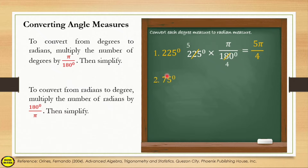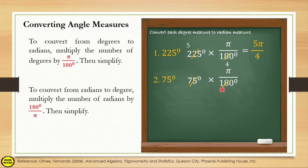Another example: 75 degrees. Multiply 75 degrees by π/180. The degree units cancel. The greatest common factor of 75 and 180 is 15. So 75 ÷ 15 = 5 and 180 ÷ 15 = 12. The answer is 5π/12.